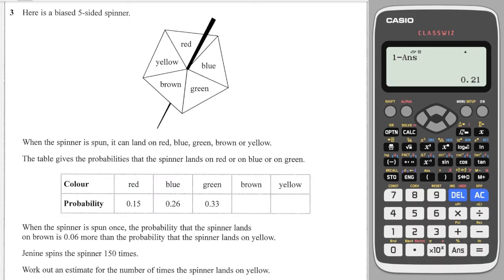Next question, and we've got this pesky spinner again, and it is going to land on one of these colours. And the condition this time is a bit different. It says when the spinner is spun once, the probability that the spinner lands on brown is 0.06 more than the probability that it lands on yellow. So I always take the one which is smallest first. So the yellow one is smaller. So I'm going to label that one x. And then that makes it a little bit easier to label what brown will be, because brown is 0.06 more than yellow. So therefore it is x plus 0.06.